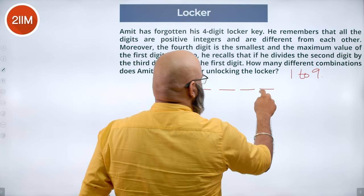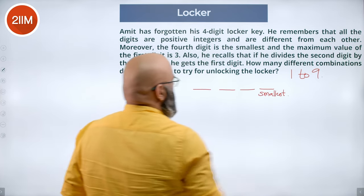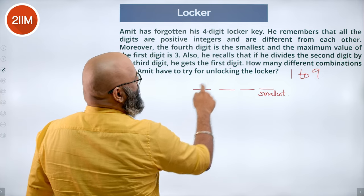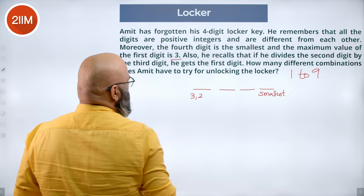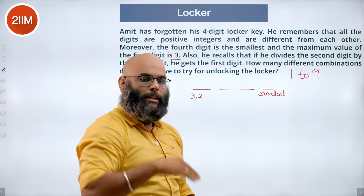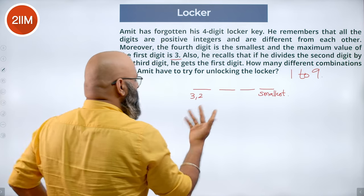So the options that we have is any value between 1 to 9. It also says the last digit is the smallest. Now the first digit, the maximum value that it can have is 3. So that means we can have 3, we can have 2. We try taking 1 here, the smallest digit has to be less than 1, that becomes 0, but we have only between 1 to 9. So 1 is not possible.